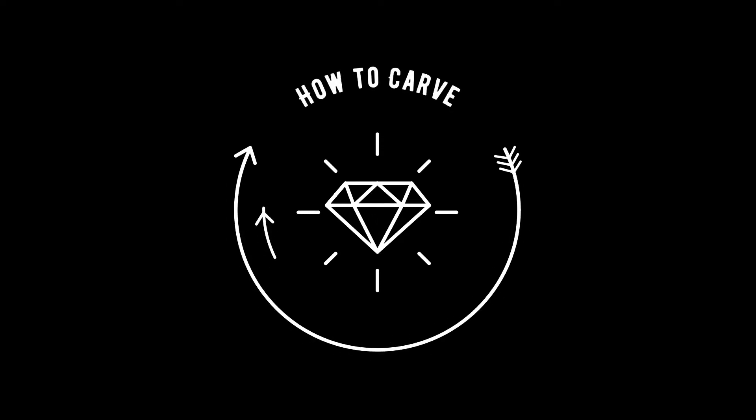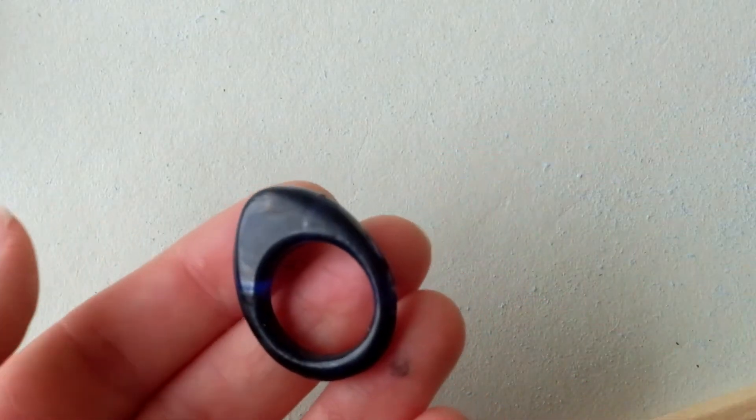Today I'm going to show you how to carve a smooth ring out of wax which is then going to be cast into a silver ring.